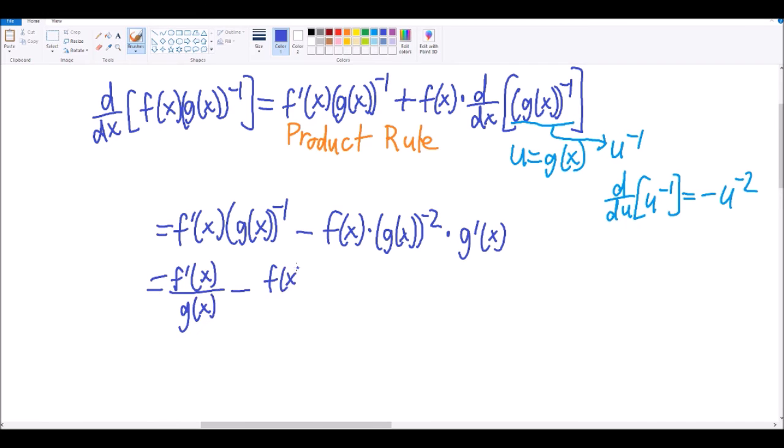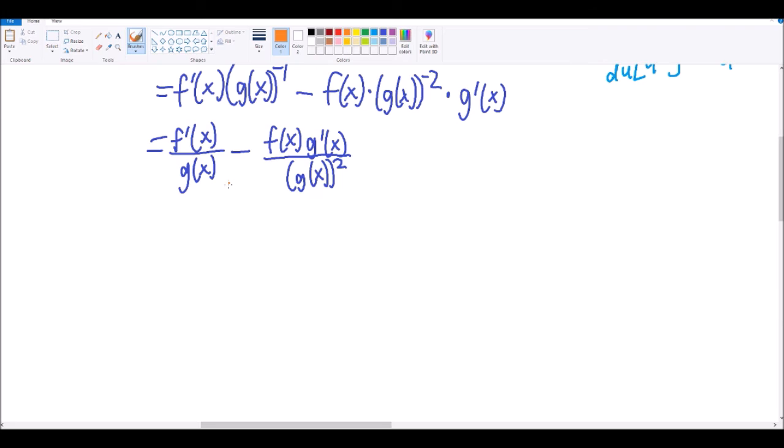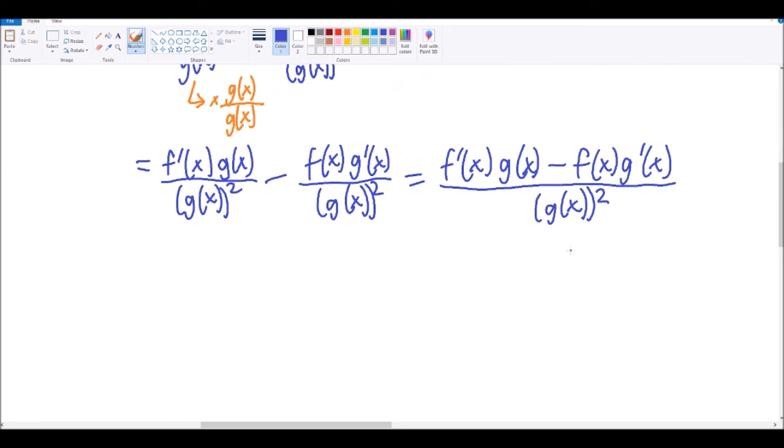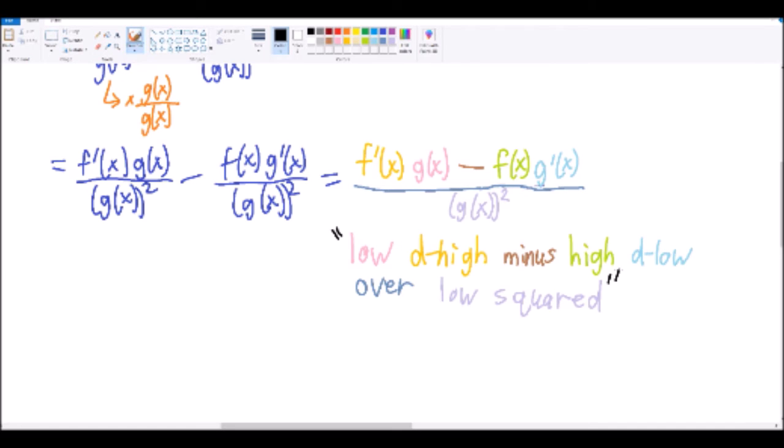And then we simplify a bit. And finally, we get the quotient rule we all know and love. We just multiply the first fraction by a fancy one, which would be g over g, and then combine the fractions. There we go, low d high minus high d low over low squared, that's the quotient rule.